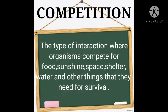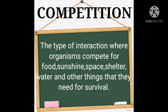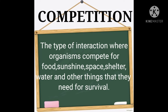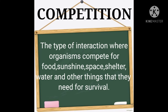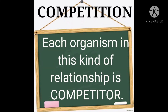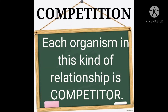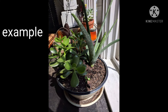Competition is the type of interaction where organisms compete for food, sunshine, space, shelter, water, and other things they need for survival. Each organism in this kind of relationship is called a competitor. Example: different kinds of plants sharing the same patch all compete for food, sunshine, space, shelter, and water.